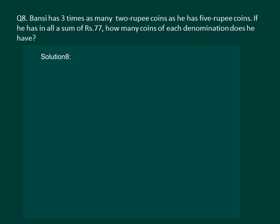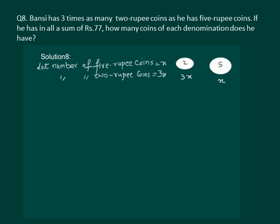Let us read the question. Bansi has 3 times as many 2-rupee coins as he has 5-rupee coins. He has in all a sum of rupees 77. How many coins of each denomination does he have? Bansi has 2-rupee coins and 5-rupee coins. Let the number of 5-rupee coins equal x, then the number of 2-rupee coins is 3x.